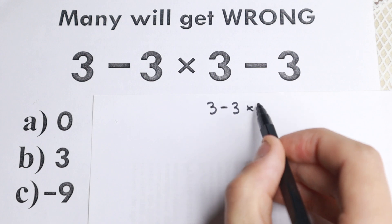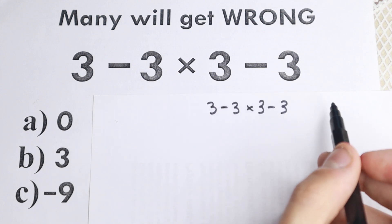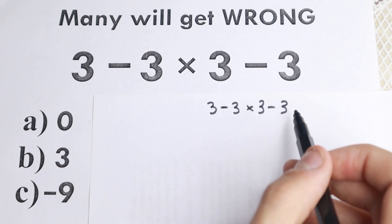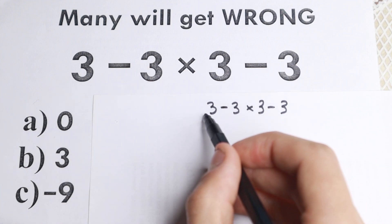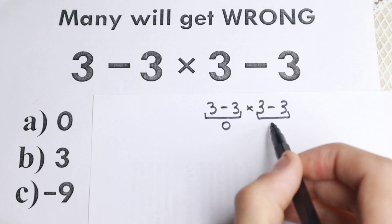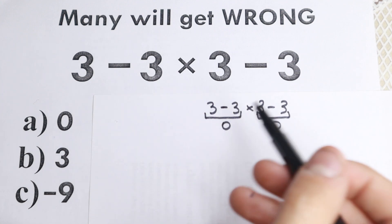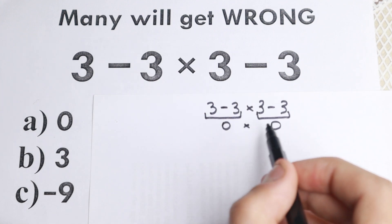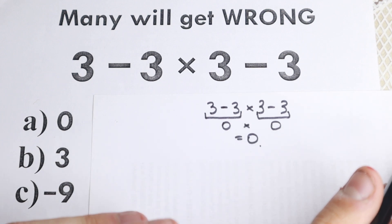We have 3 minus 3 times 3 minus 3. A lot of students like to solve it like this: they say, okay, 3 minus 3, this is equal to 0. And 3 minus 3, this is equal to 0, which is really great, this is simpler for them. Because 0 times 0 equals 0. So a lot of students solve it like that.